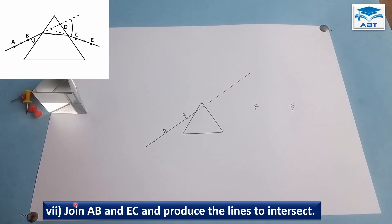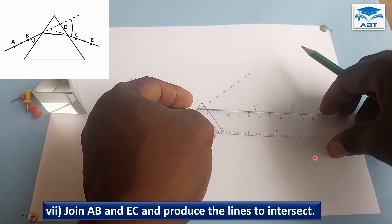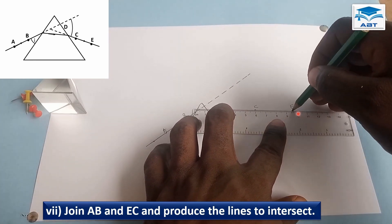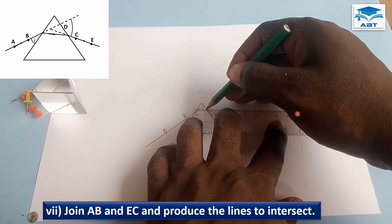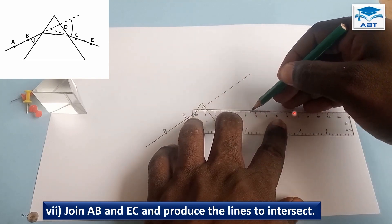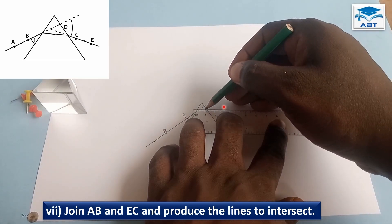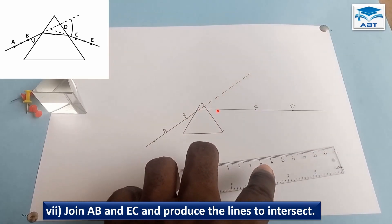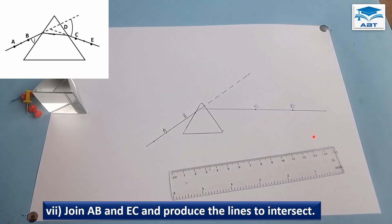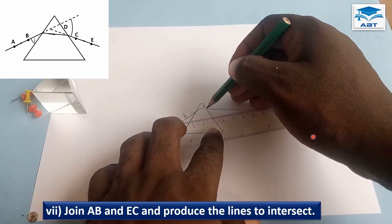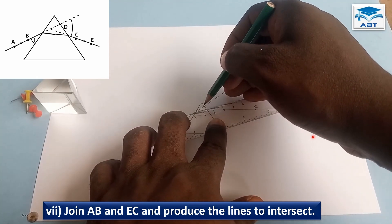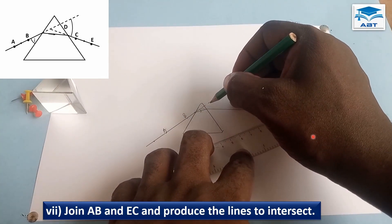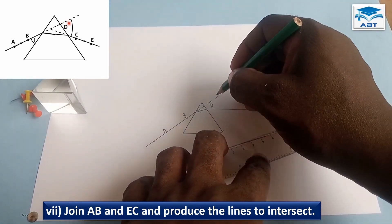We are going to join AB and EC and produce the lines to intersect. So we join EC to meet the outline and produce it to intersect with line AB. So we have angle D here.